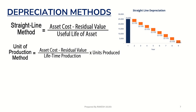The second method is the unit of production method. This method is used when we know the lifetime production capacity of a machinery. The formula is: (asset cost minus residual value) divided by lifetime production, multiplied by units produced in that year. In the first year, however many units were produced — that is what we calculate here and multiply to get the depreciation amount for that particular year.